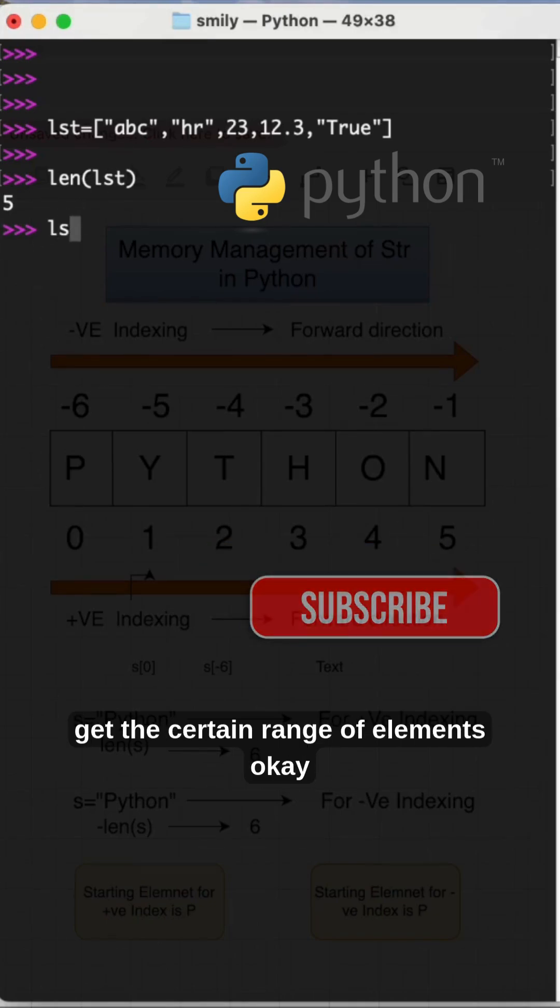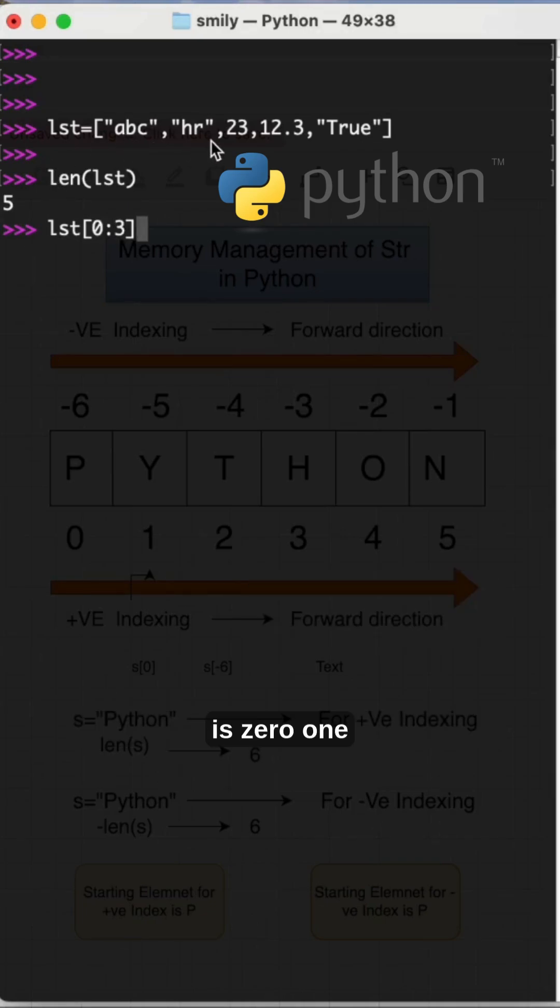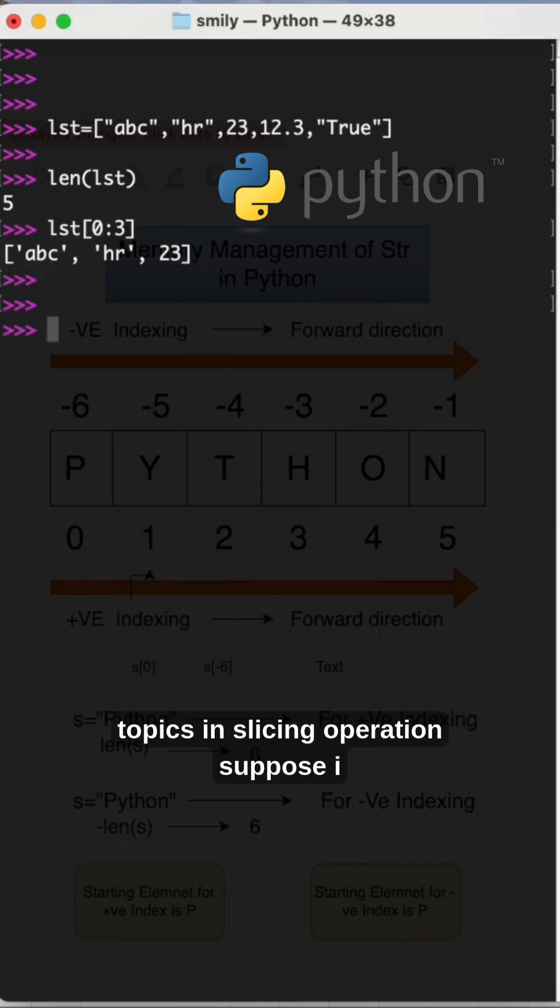I want to get the certain range of elements. I want to get 0 to 3. So what are the elements? Indexing will start from 0, that is 0 1 2, so length minus 1. 0 to 2 you will get what is this: ABC HR 23. See this is how the advanced topics in slicing operation.